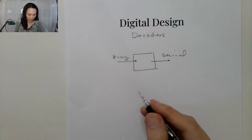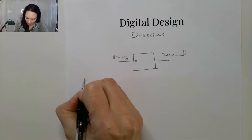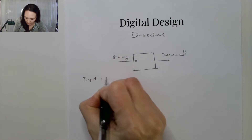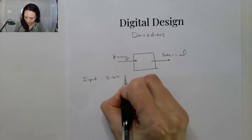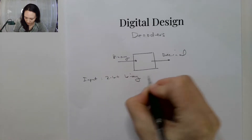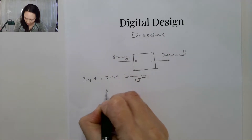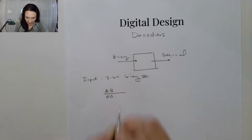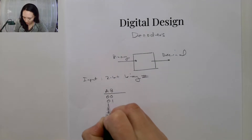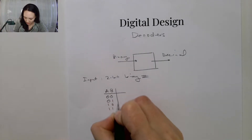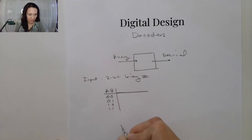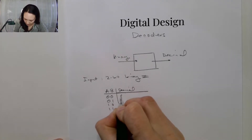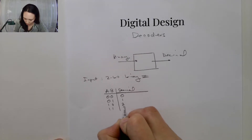To clarify what I mean, suppose our input is a 2-bit binary number. So if our input bits are A and B, then those can be 00, 01, 10, or 11. So in decimal, if we wanted to decode this binary, this would be decimal 0, 1, 2, 3.